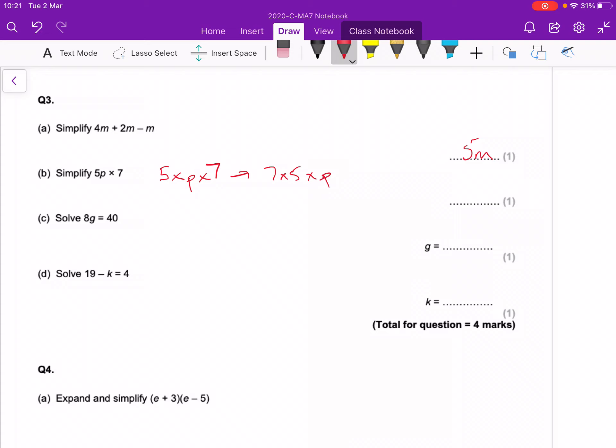So we can multiply the numbers, 7 times 5 is 35 times by p, which we write as 35p. The next one.